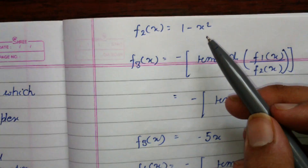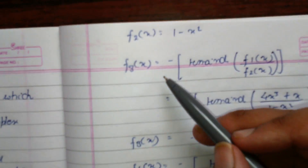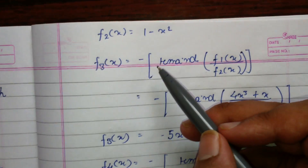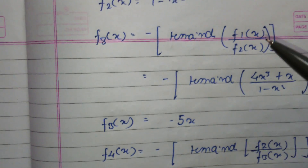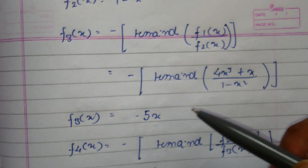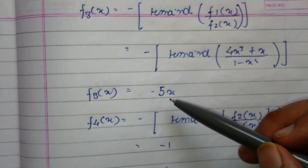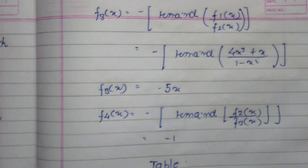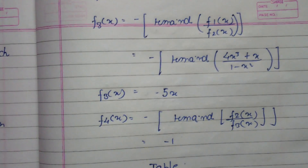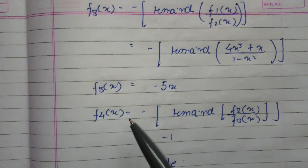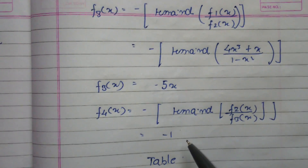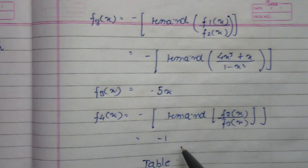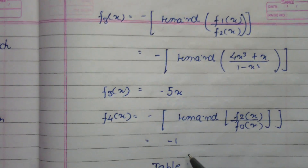The next step repeats the same process: f3(x) equals the negative of the remainder of f1(x) divided by f2(x). So now we divide f1(x) by f2(x) instead of f(x) by f1(x). f3(x) becomes -5x. We continue until we get a constant: f4(x) is the negative remainder of f2(x) divided by f3(x), which gives the constant value -1. We stop here.